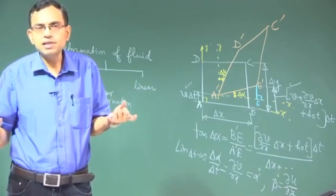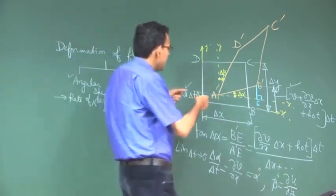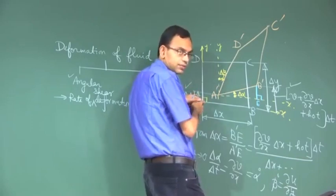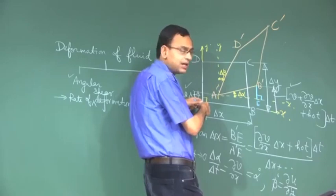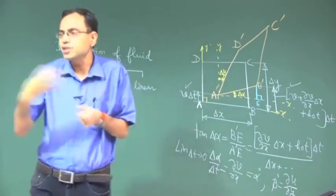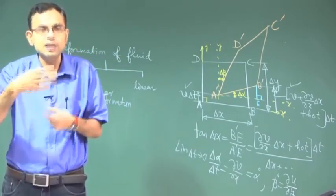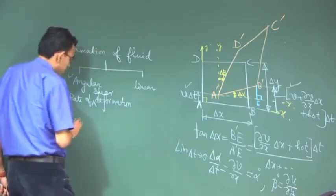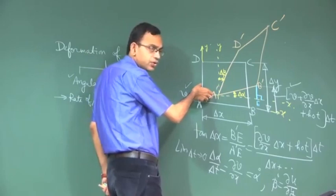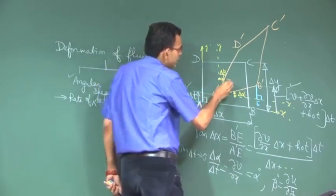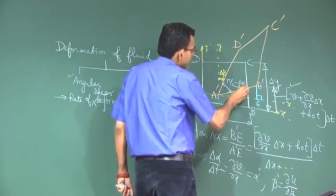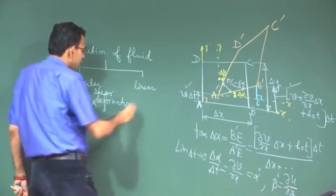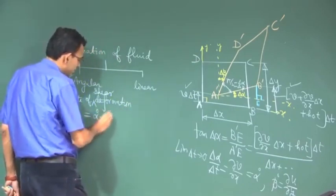You can always argue that the basis of taking originally two perpendicular line elements is just for the sake of definition — this should be interpreted as a definition, as the grammar of the subject. The original angle is pi by 2; the final angle is pi by 2 minus delta alpha minus delta beta. So the change in angle is delta alpha plus delta beta. Therefore the rate of change of angle is alpha dot plus beta dot.